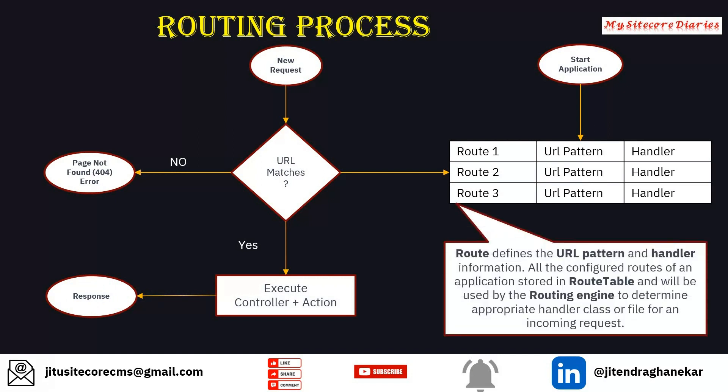In summary, a route defines the URL pattern and handler information. The route stores the URL pattern — what pattern the URL is coming in — and the handler. All the configured routes of an application are stored in the route table. This complete process is executed by the routing engine. The routing engine defines which handler class to use, or if there is any file associated, that file will get mapped, and this is how the incoming request will be processed.